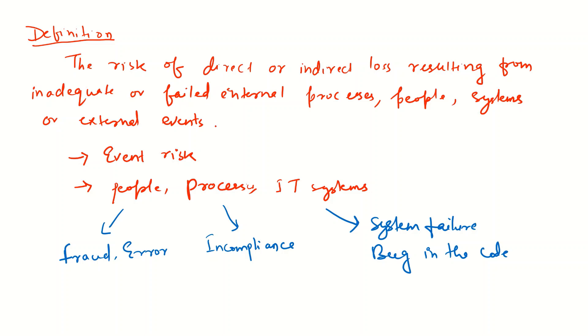There are a few things we talked about here. We're talking about risk coming from the processes, people, and systems. All these things are risk related to some events. So operational risk is event risk. It is always associated with some sort of event, whether it's related to people, process, or IT system.